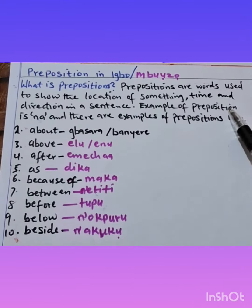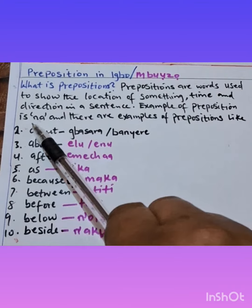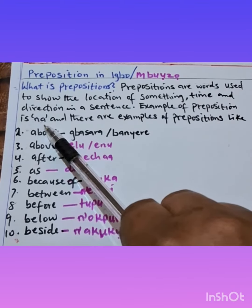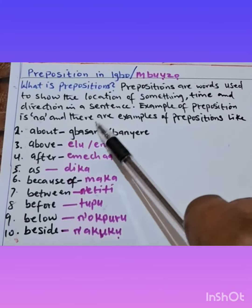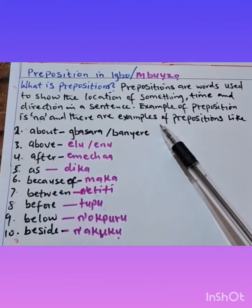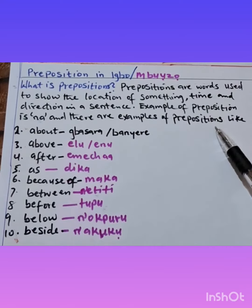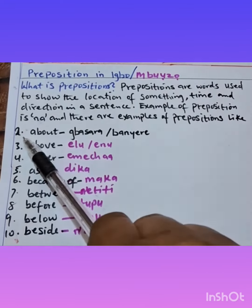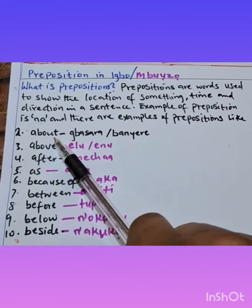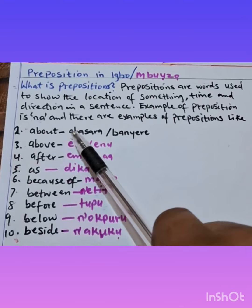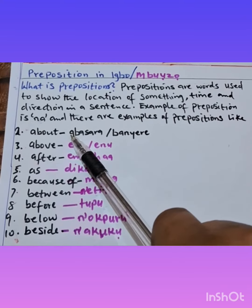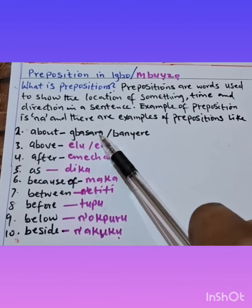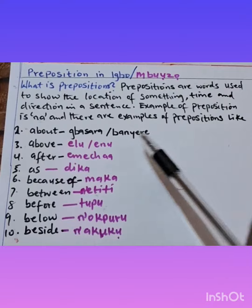An example of a preposition is 'na'. Another example is 'about', which in Igbo is 'banyere'.